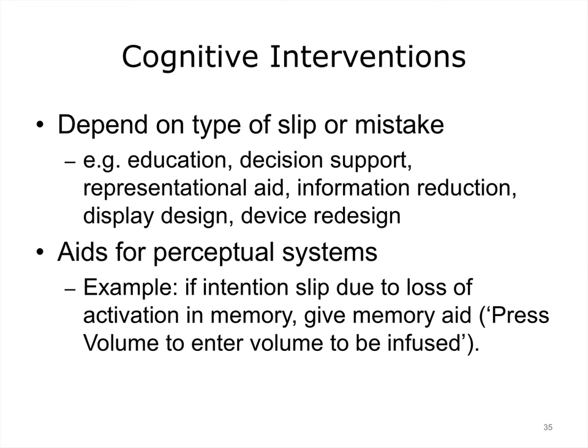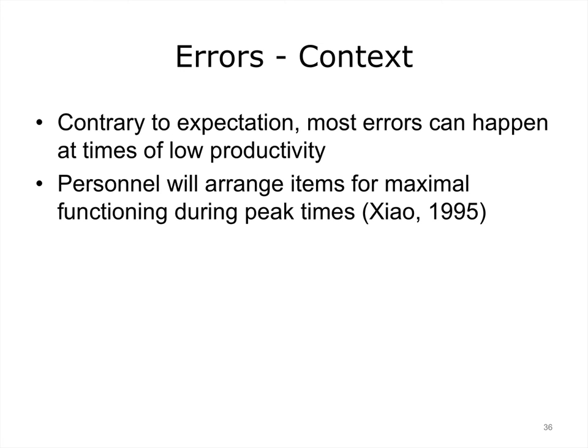Interventions for preventing errors depend on the type of slip or mistake. They can include education, decision support, representational aids, information reduction (i.e., simplifying the system), display design, and device redesign. Aids for perceptual systems are important. Contrary to expectation, most errors happen at times of low productivity. Personnel in high-stress critical jobs are willing to arrange items for maximal functioning during peak times.